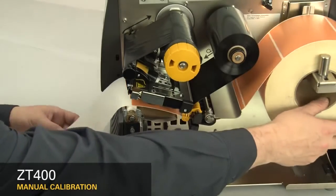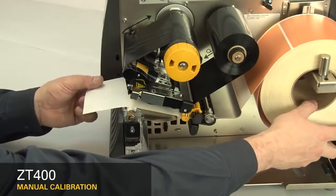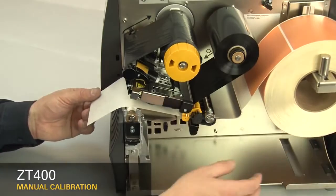If your media has a gap, also referred to as a web, remove labels and rewind the roll to ensure only liner is under the media sensors.